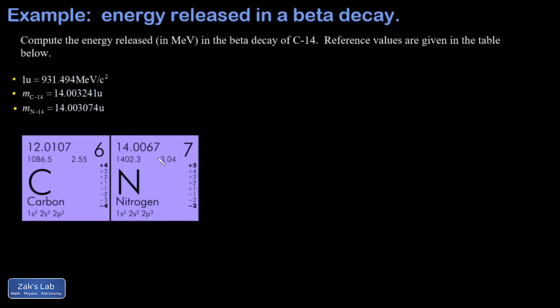I clipped out a section of the periodic table involving these two elements. This beta decay transforms the carbon nucleus into a nitrogen nucleus. The process is that a neutron turns into a proton. Carbon has atomic number six, meaning six protons, and C14 has 14 total nucleons, which means eight neutrons.